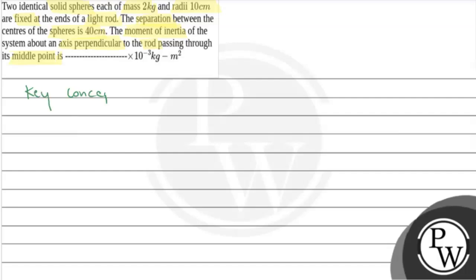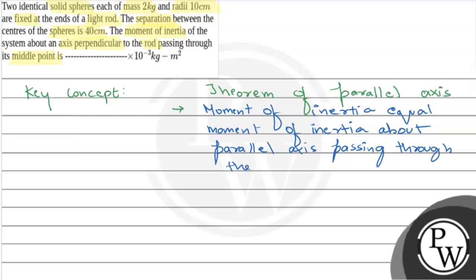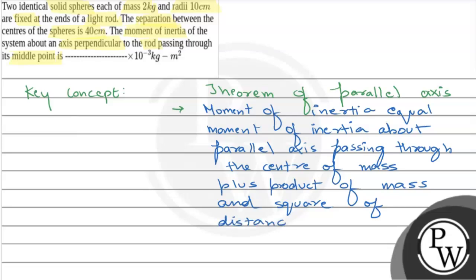The key concept here is the Theorem of Parallel Axes. It states that the moment of inertia of a body about an axis is equal to the moment of inertia about a parallel axis passing through the center of mass, plus the product of the mass and the square of the distance between the two parallel axes.